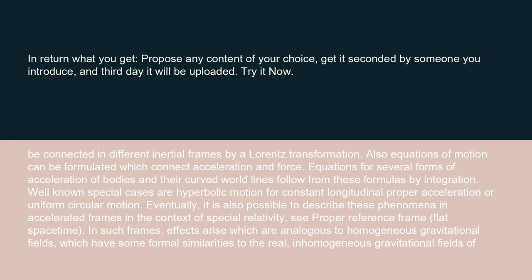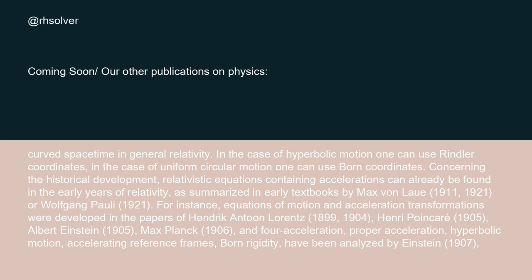It is also possible to describe these phenomena in accelerated frames in the context of special relativity. See proper reference frame, flat spacetime. In such frames, effects arise which are analogous to homogeneous gravitational fields, which have some formal similarities to the real inhomogeneous gravitational fields of curved spacetime in general relativity. In the case of hyperbolic motion, one can use Rindler coordinates. In the case of uniform circular motion, one can use Born coordinates.